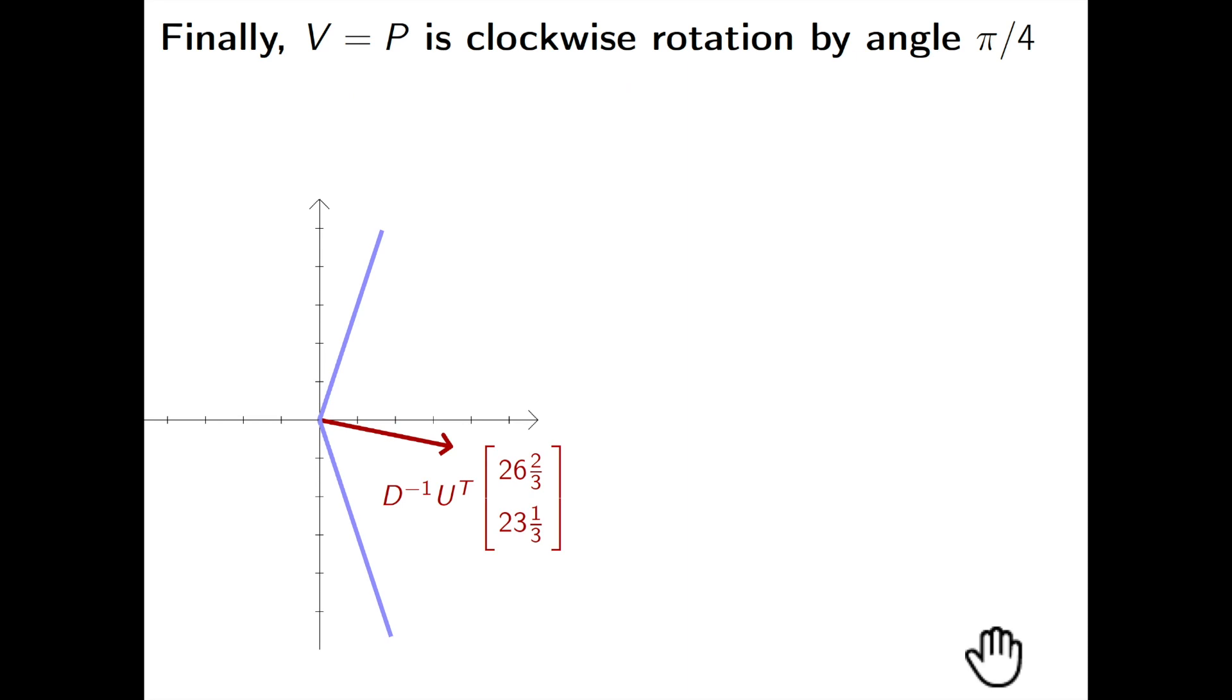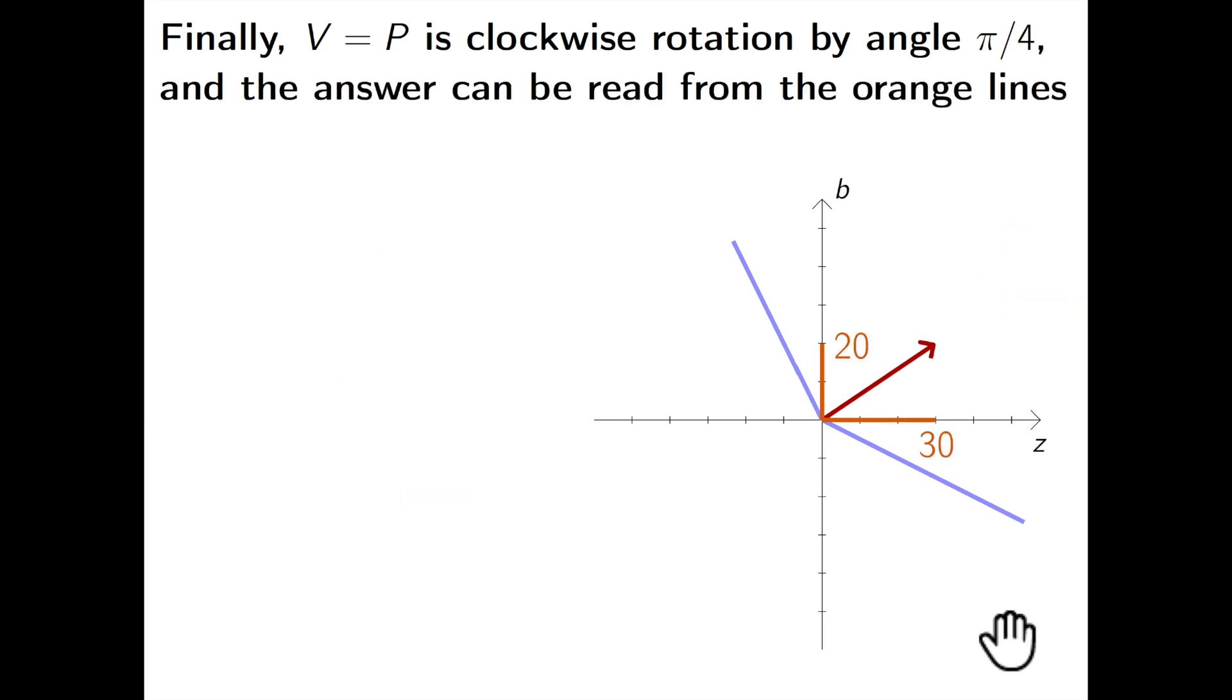Next we use the V matrix which is clockwise rotation by angle pi over 4. And that will rotate this vector back to this direction. So finally this is our answer. It's V D minus 1 U transpose times the right hand side. So that's why we can read off the ages of Zoe and Bill from the projections of this vector to the coordinate axis. So we know that Zoe is 30 years old and Bill is 20 years old.